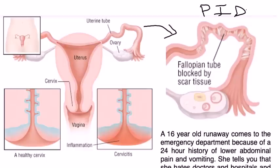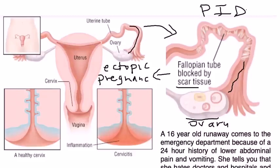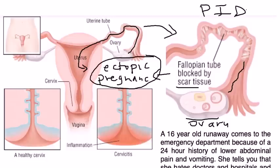They've blown up and enlarged the fallopian tube here to show that scarring. Scar tissue can eventually build up in the fallopian tube, and that can lead to ectopic pregnancies. Ectopic pregnancies happen because when the ovary releases an egg, it's not able to travel properly because of all the scar tissue. It can't travel all the way down and implant into the uterus — the scar tissue blocks it. So it's very important to remember that PID predisposes to ectopic pregnancy.